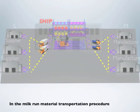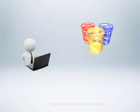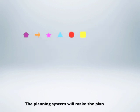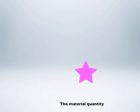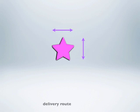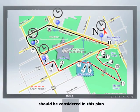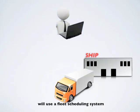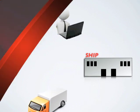In a milk run material transportation procedure, at the beginning, the transportation planner downloads material collection or distribution requests. The planning system will make the plan to determine what material requests should be combined into one milk run. The material quantity, size, delivery route, and delivery time window are considered in this plan. Then, the fleet dispatcher will use a fleet scheduling system to assign material collection and distribution plans to truck drivers.